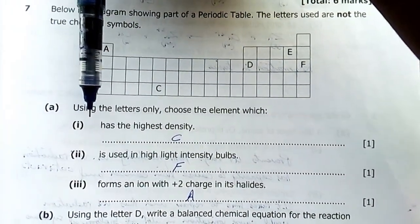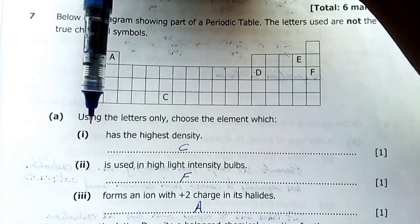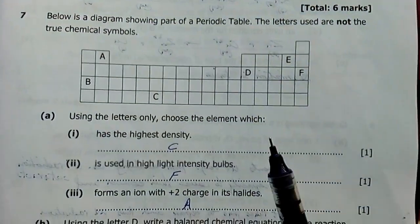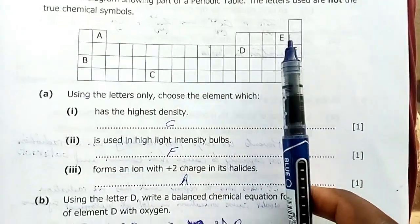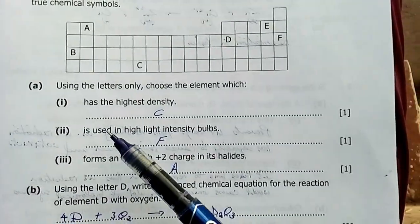That is why the most reactive metal is down here, down in group 1. Cesium is the most reactive. Francium is ignored, it's radioactive. And the most reactive non-metal is up there, fluorine.